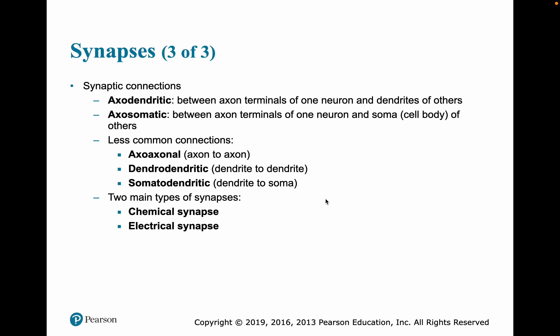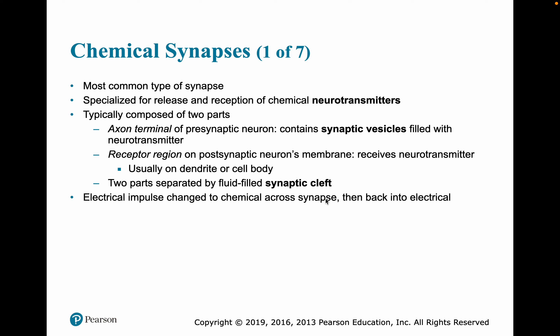We can have connections between an axon and a dendrite, or an axon and the cell body — that would be axosomatic. Some less common ones include axonal, dendro-dendritic, and somatic-dendritic. The two major types of synapses are chemical synapses and electrical synapses. We've mostly been talking about chemical synapses, which is the most common type of synapse.